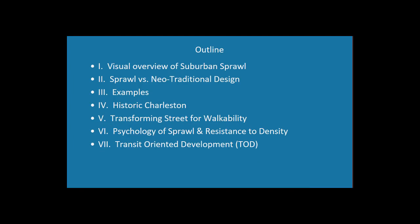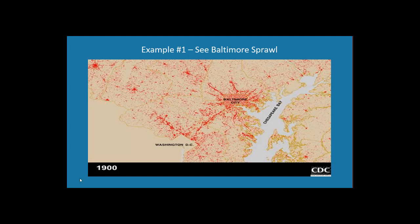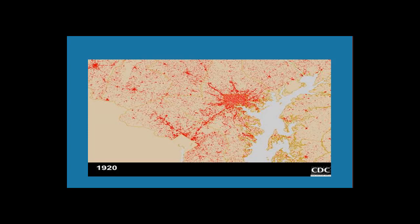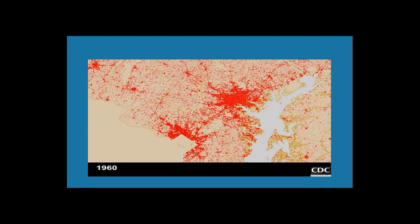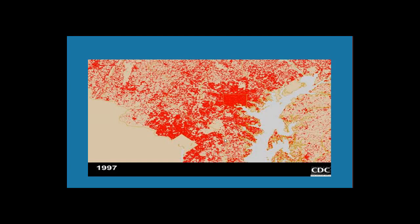We'll start with an overview of suburban sprawl. Here is Baltimore in 1900 — most people lived inside the city, with some development along train lines. From 1900 to 1920, most development stays within the city. But by 1960, people are moving out into the hinterland, more spread out, largely because cars became more available. By 1997, the countryside virtually disappears and there are people everywhere — a huge transformation, with rising commute times and greenhouse gas emissions.